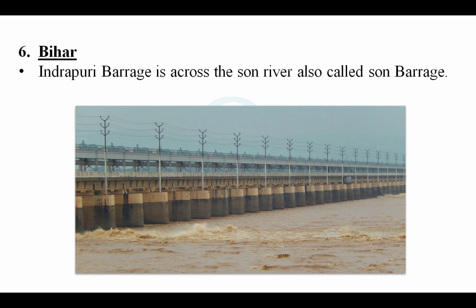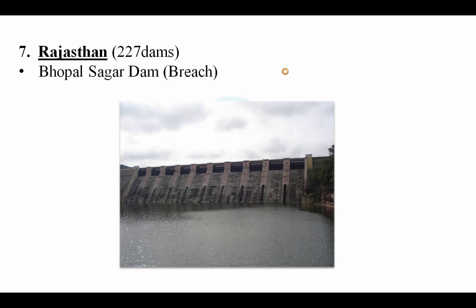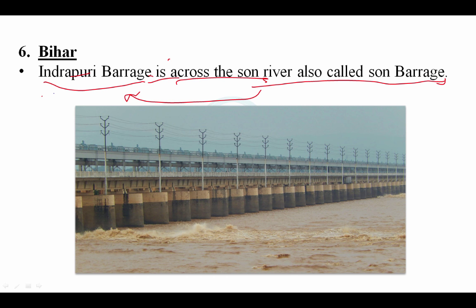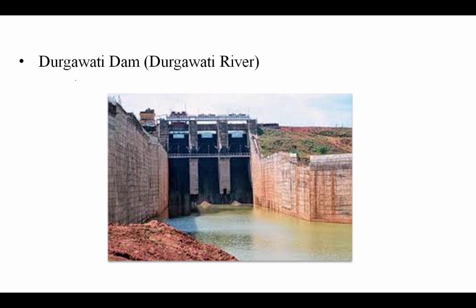From Bihar, remember one barrage and one dam. First is Indrapuri Barrage across the Son river, also called the Son Barrage, situated in Bihar. Second is Durugavati Dam, constructed on the Durugavati river. So from Bihar: Indrapuri Barrage and Durugavati Dam.